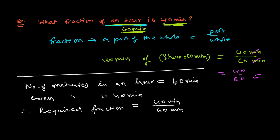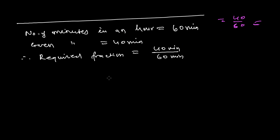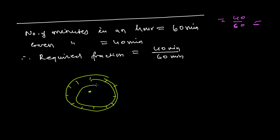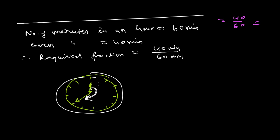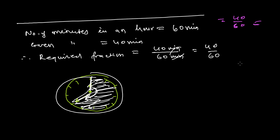Looking at a visual, the whole circle represents 60 minutes. We can see 30, 35, 40, and 45 minutes marked on it. The question is: what fraction of this whole 360-degree circle is the shaded portion? The shaded portion is 40 minutes, and the whole is 60 minutes, so that is 40 over 60.